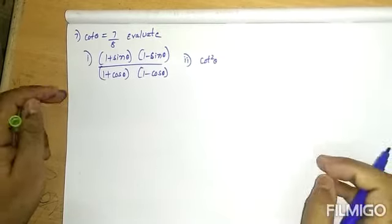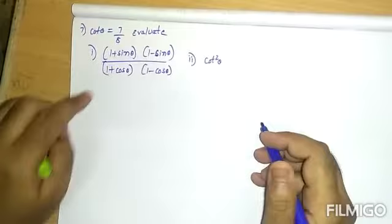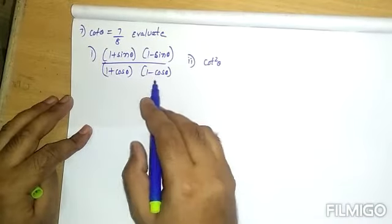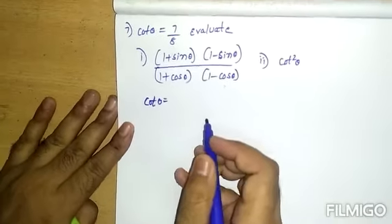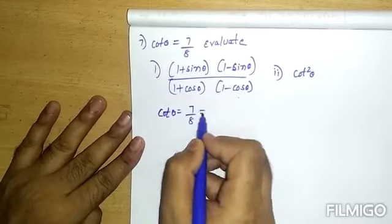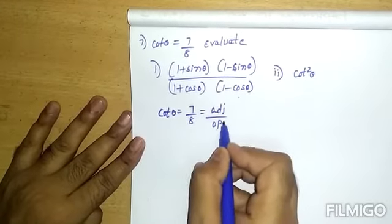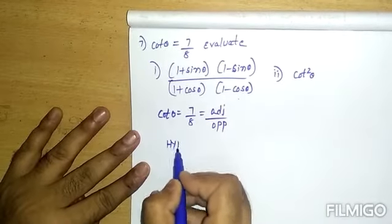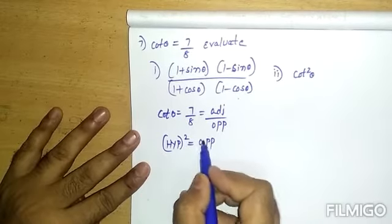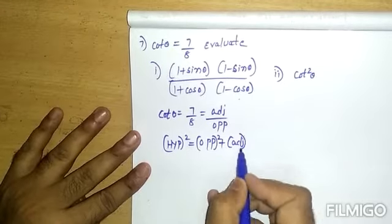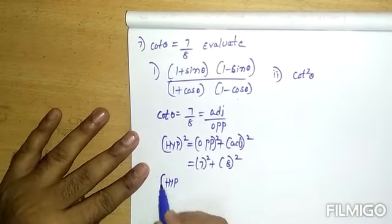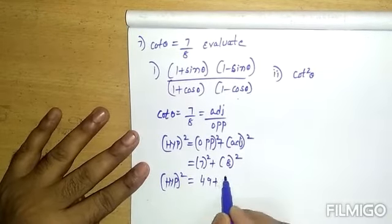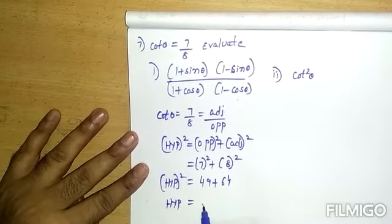Seventh question: cot theta equals 7 by 8. Evaluate the expression (1 + sin theta)(1 - sin theta) divided by (1 + cos theta)(1 - cos theta). Cot theta equals adjacent by opposite, so adjacent is 7 and opposite is 8. By Pythagoras theorem, hypotenuse squared equals 7 squared plus 8 squared equals 49 plus 64, so hypotenuse equals root 113.